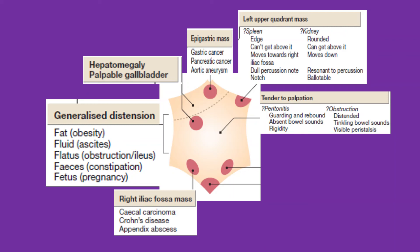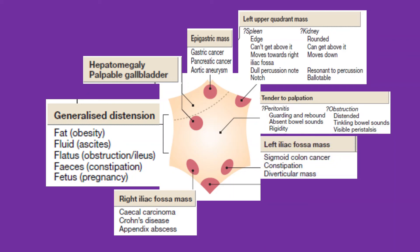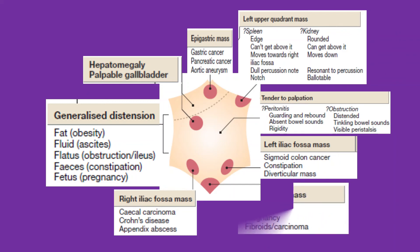Left iliac fossa mass is usually due to sigmoid colon cancer, constipation, or a diverticular mass. A suprapubic mass could be due to urinary bladder distension, pregnancy, or a uterine mass such as fibroids or carcinomas.